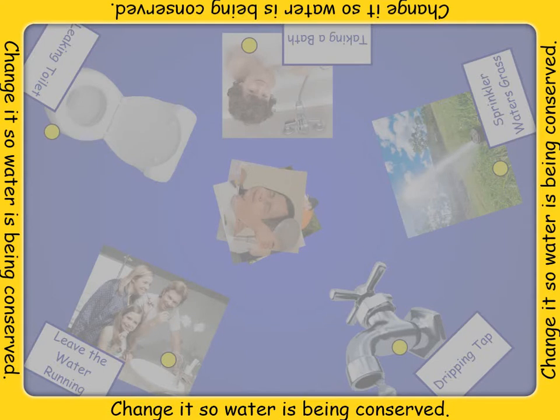On this screen are five pictures of ways water can be wasted. In the middle are five ways that water can be conserved. Match the water waster with the way water should be conserved instead. Touch the pictures in the middle to hear a description of what is going on to help you make the match.